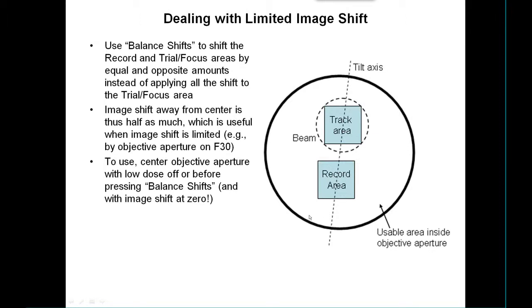If we had the record area in the middle, the track area would have to be shifted all the way out from the middle, using up all that range. So instead, we push the balance shift button to shift the whole situation so both record and track are displaced equal amounts to either side of the center.